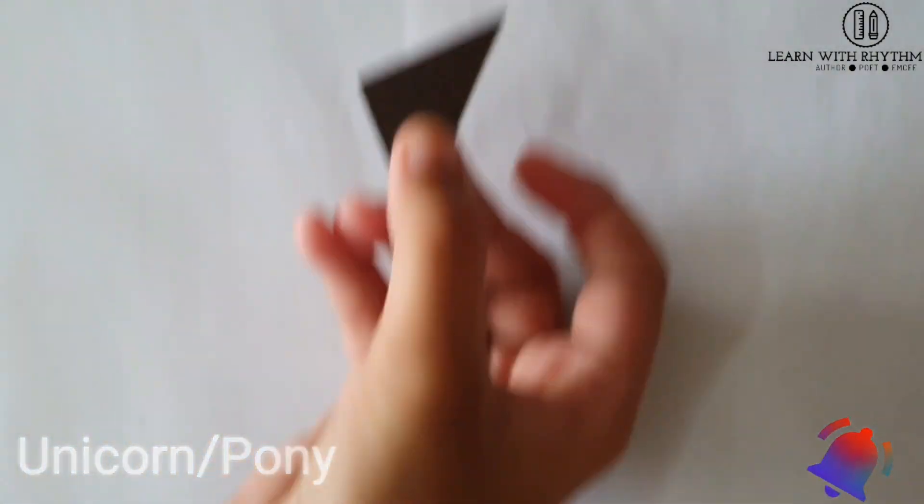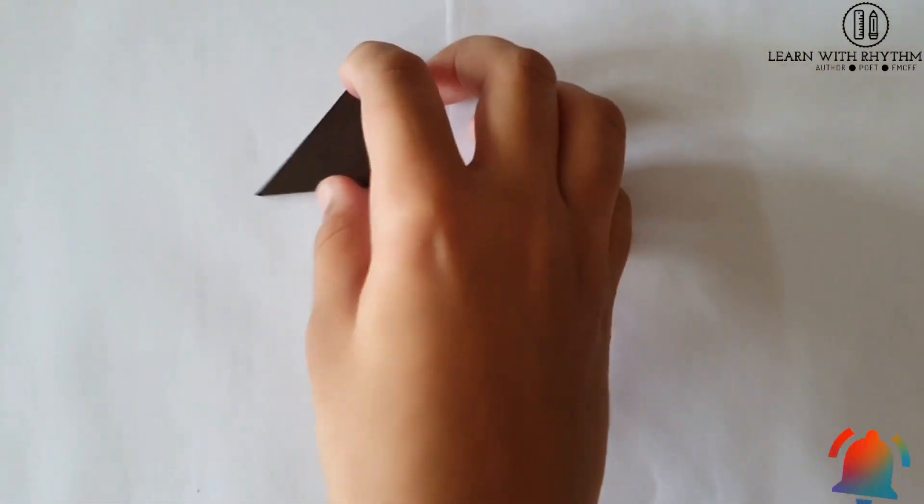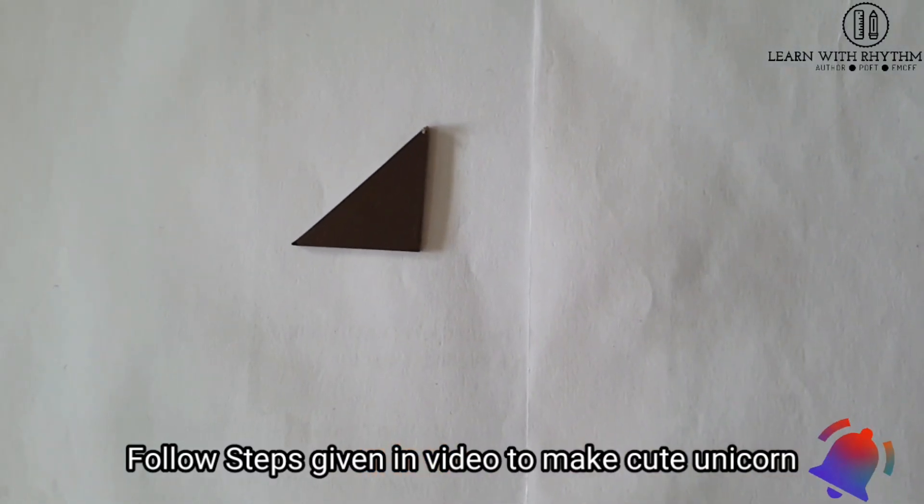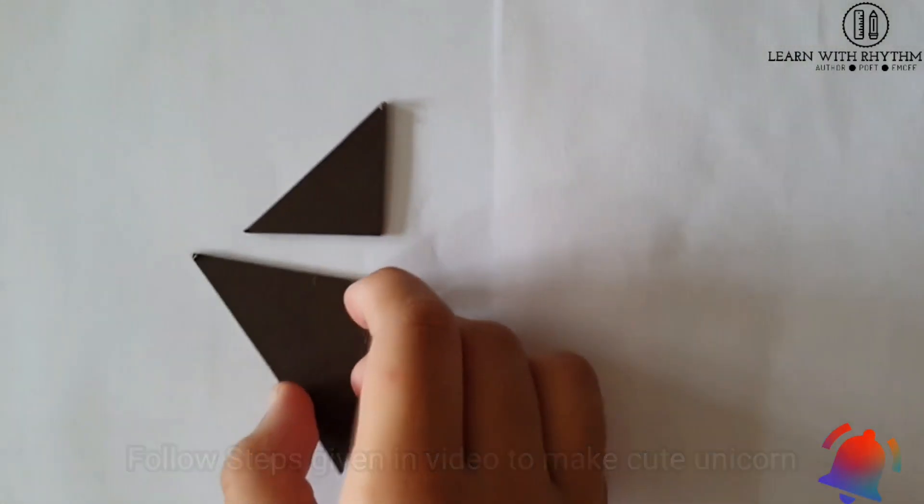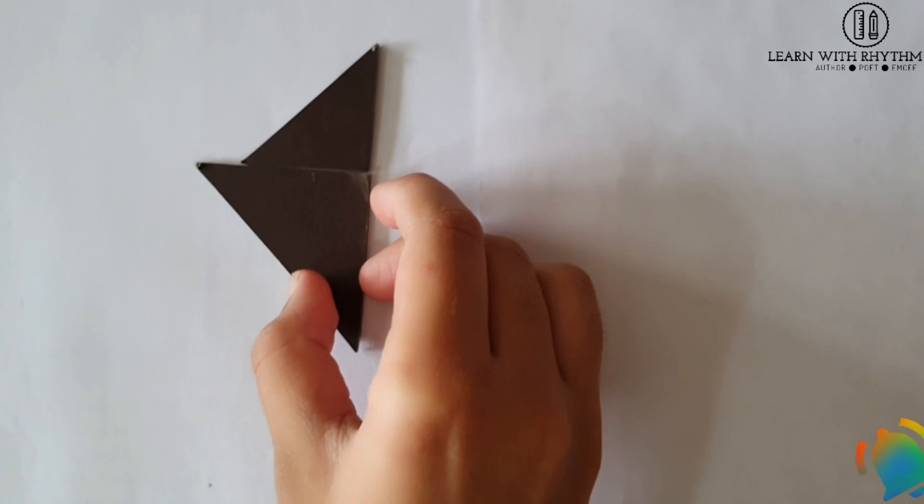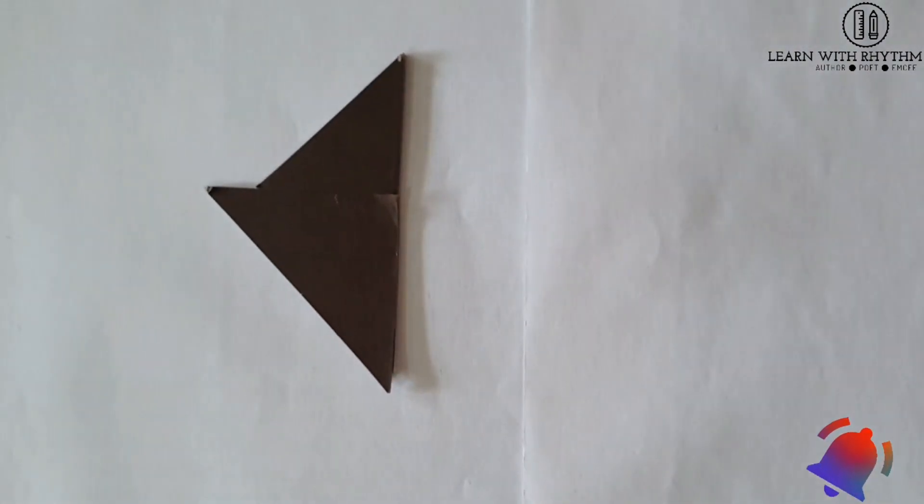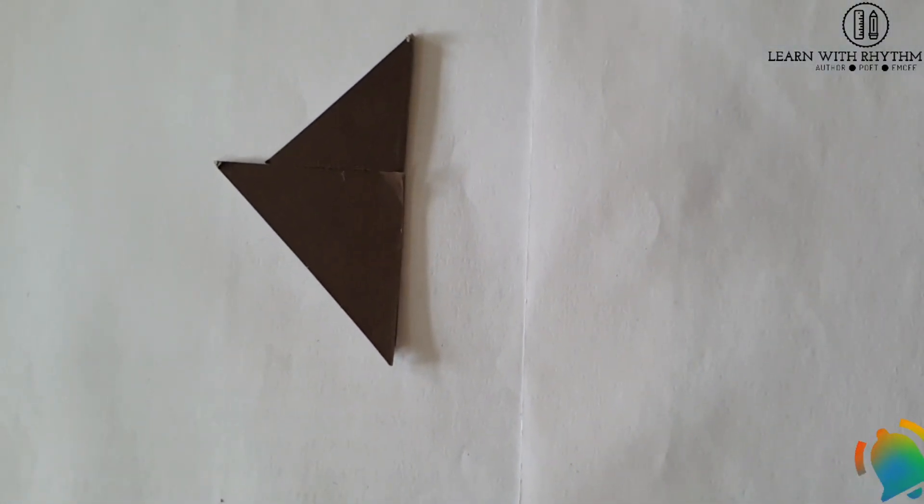First we take the small triangle and put it right here. This will be our pony's horn. Then we put this here.